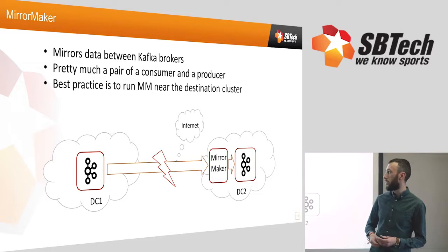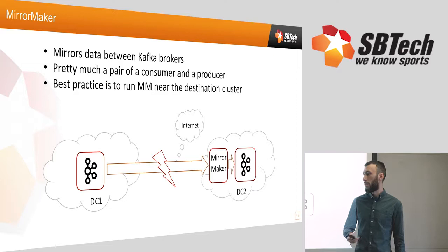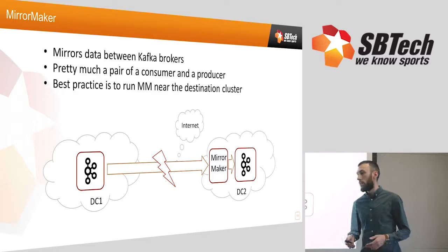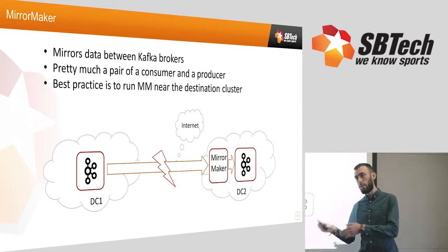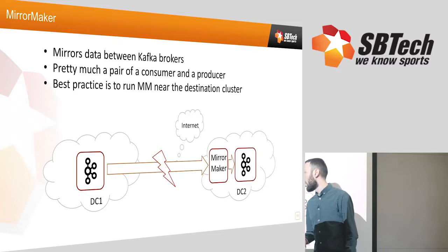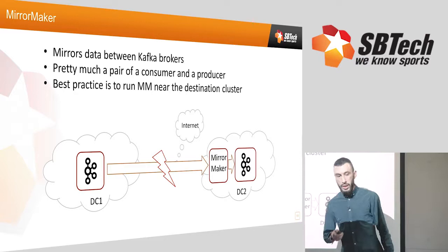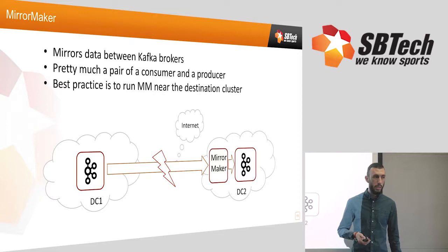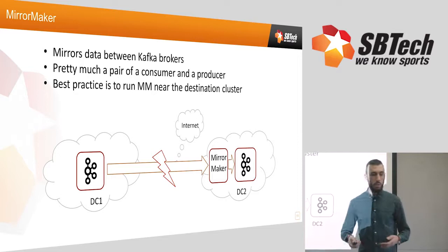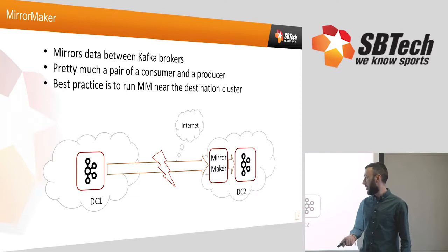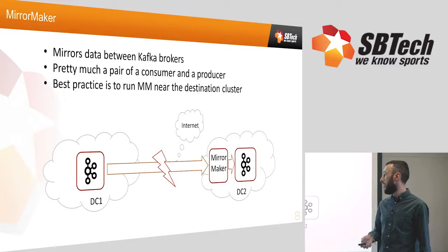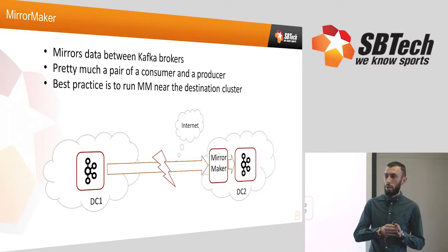Something really important for making the whole thing distributed is MirrorMaker — a small application that mirrors data between two Kafka clusters, taking a topic from one cluster in one location and pushing it to another. In the simplest explanation, it's just a consumer and producer pair: consuming from one side and producing to the other. MirrorMaker is usually run on the destination site. One reason is that messages can be duplicated or lost. This is pretty much the whole deal — it copies messages from one topic in one cluster to the same topic in another.